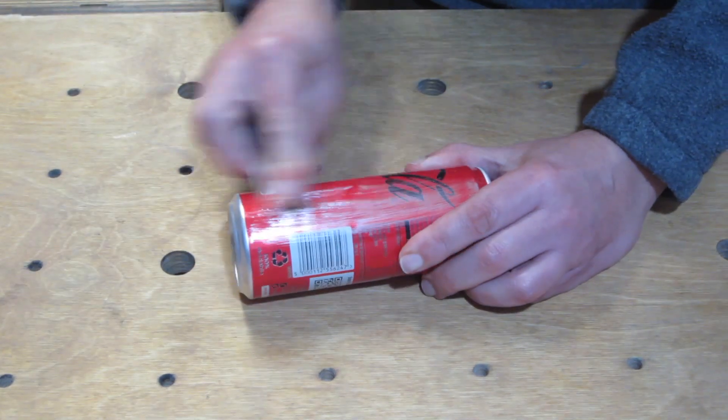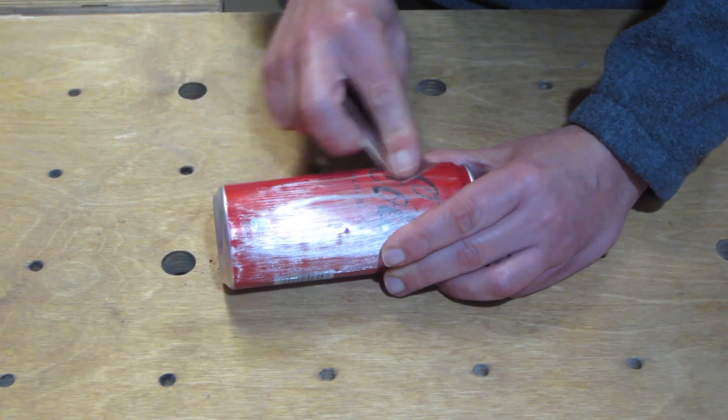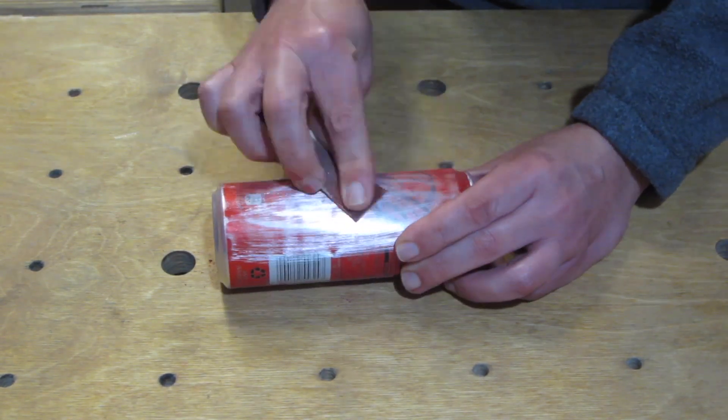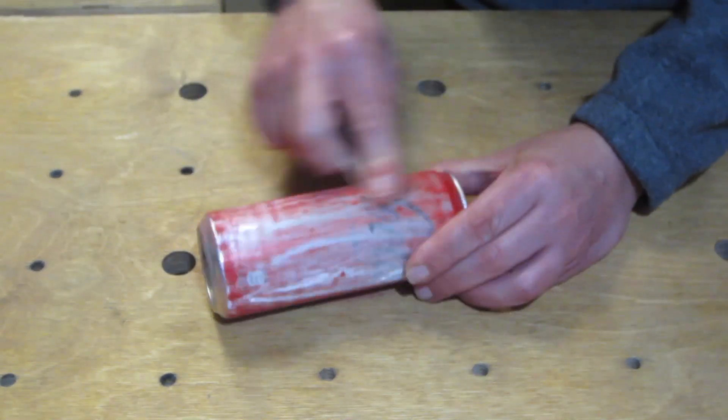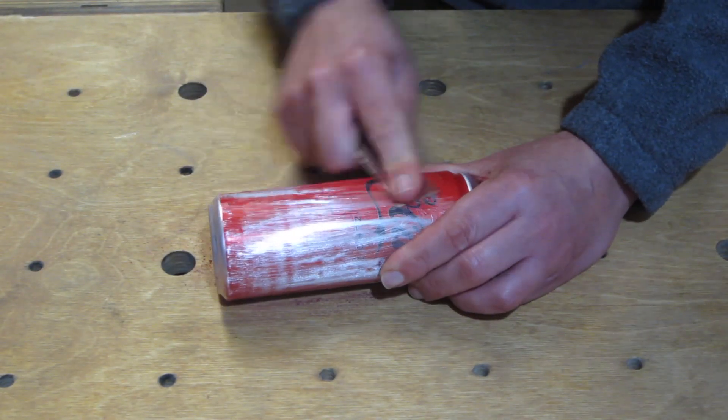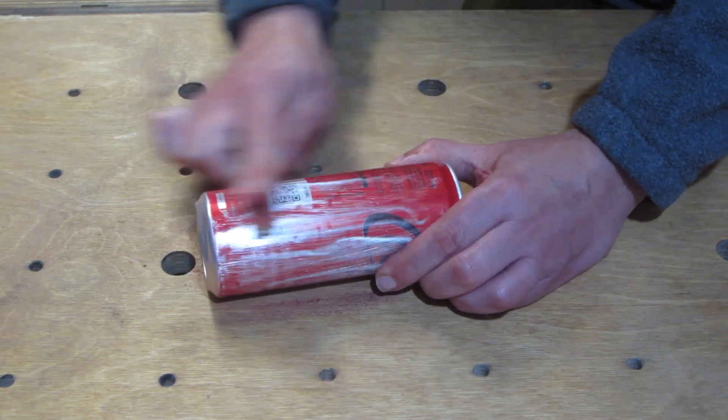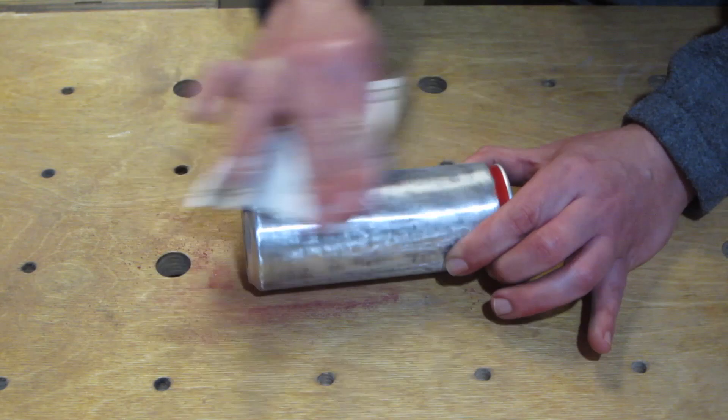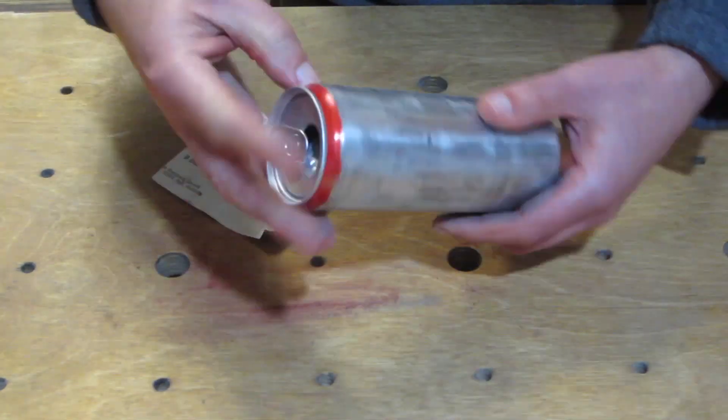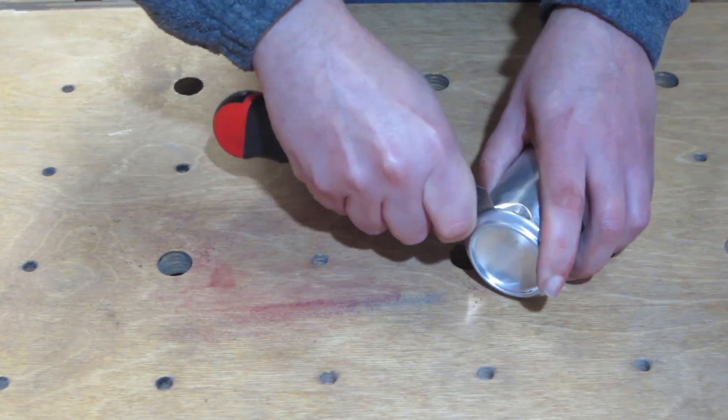Let's take a well washed can and remove all the paint. Two hours later, cut it in order to obtain an aluminum sheet.